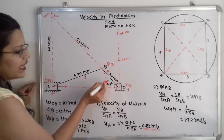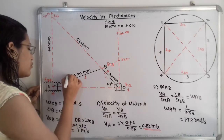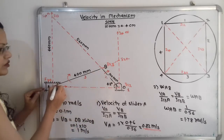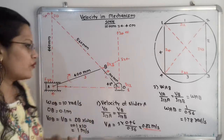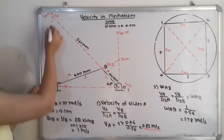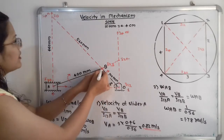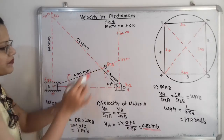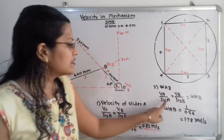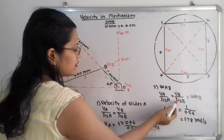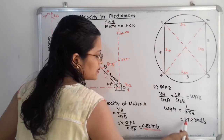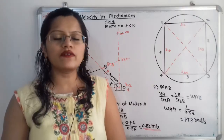For the second question — angular velocity of connecting rod AB — we use ω_AB = V / r, where r is the perpendicular distance from I13. Using V_B and I13_B: ω_AB = V_B / I13_B = 1 / 0.56 = 1.78 rad/s. This is the answer to the second question.